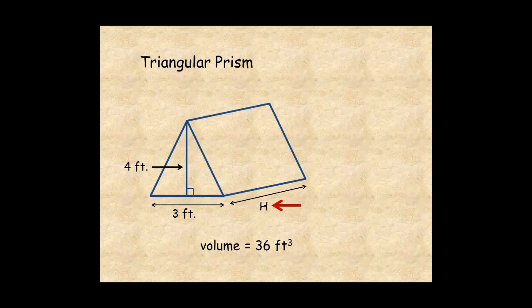Begin by finding the area of the base triangle. Multiply 3 times 4 and divide by 2, which gives 12 divided by 2, or 6 square feet. Then, substituting into the formula, you get 36 equals 6H. Divide by 6, and the height of the prism is 6 feet.